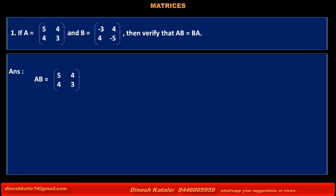Answer: Product of matrices AB is equal to matrix A [[5, 4], [4, 3]] into matrix B [[-3, 4], [4, -5]]. Multiplying elements of the first row of matrix A by the corresponding elements of the first column of matrix B, that is 5 into minus 3 plus 4 into 4.